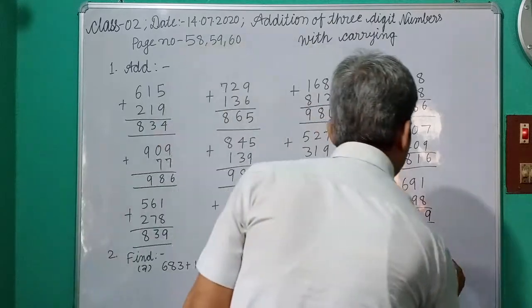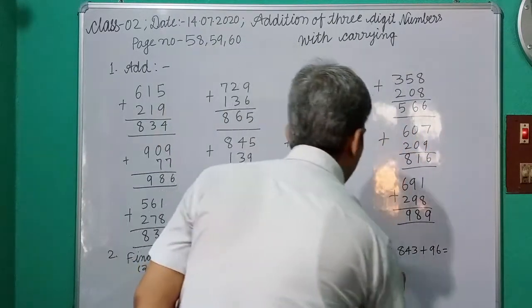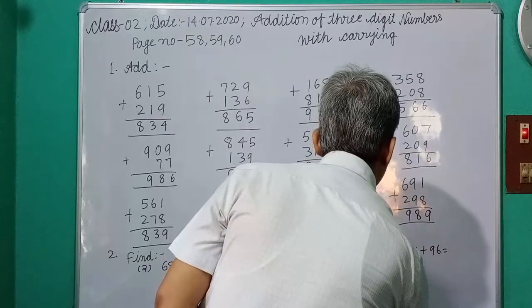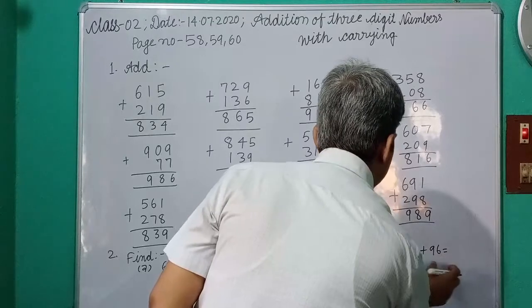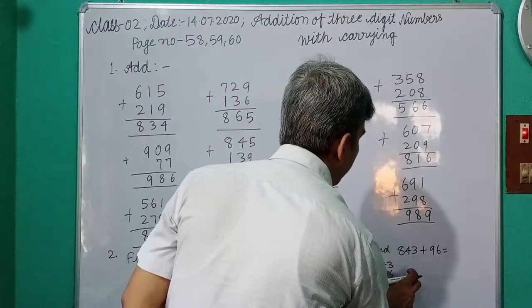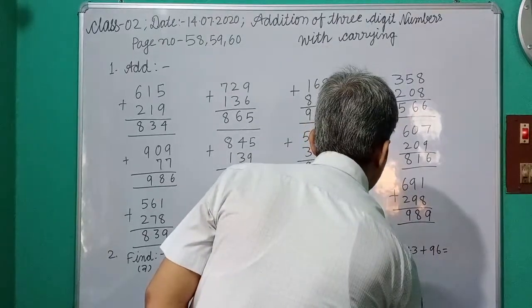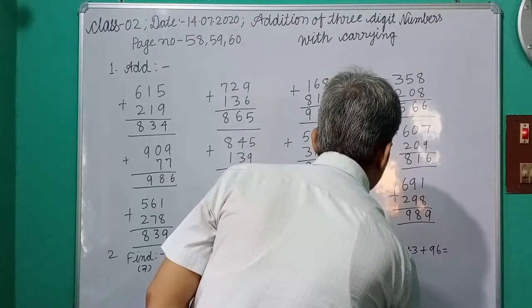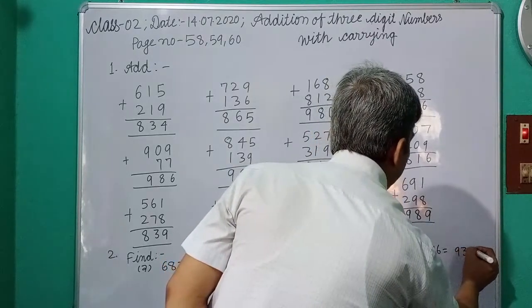Now, again find the answers. At first, write in the form of addition. 843 plus 96. In this way, 6 is 1's place, so write in 1's place. And 9 is 10's place, so write in 10's place digits. 6 plus 3 equals 9. 9 plus 4 equals 13, write 3, carry 1. 8, 1, 9. So, write answer 939.